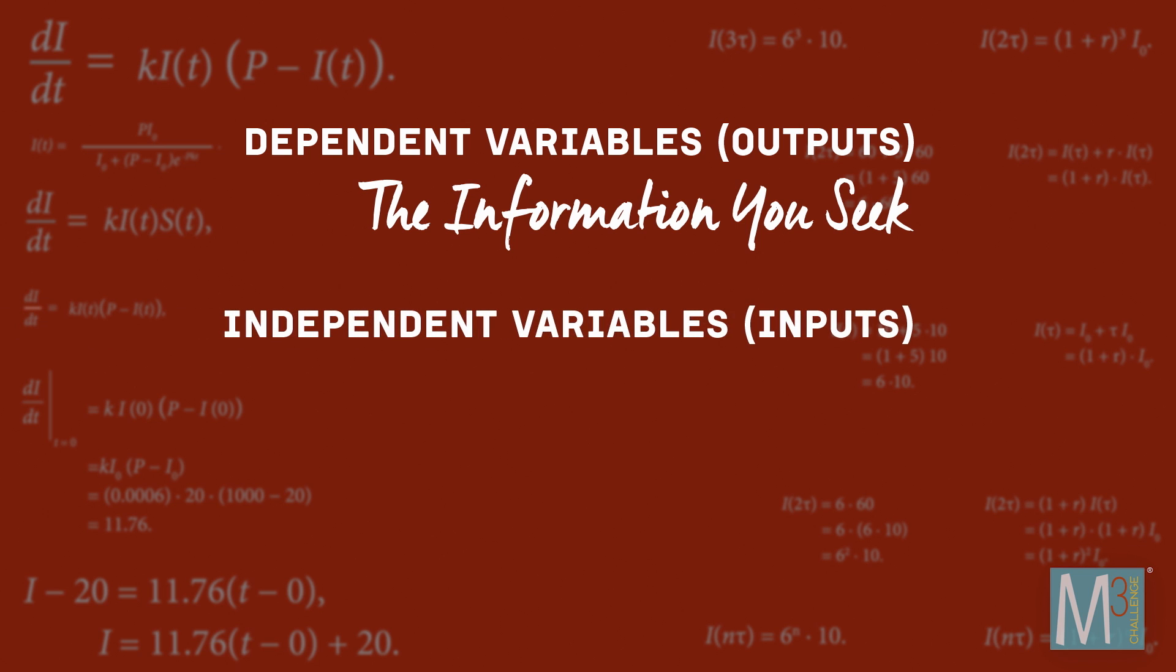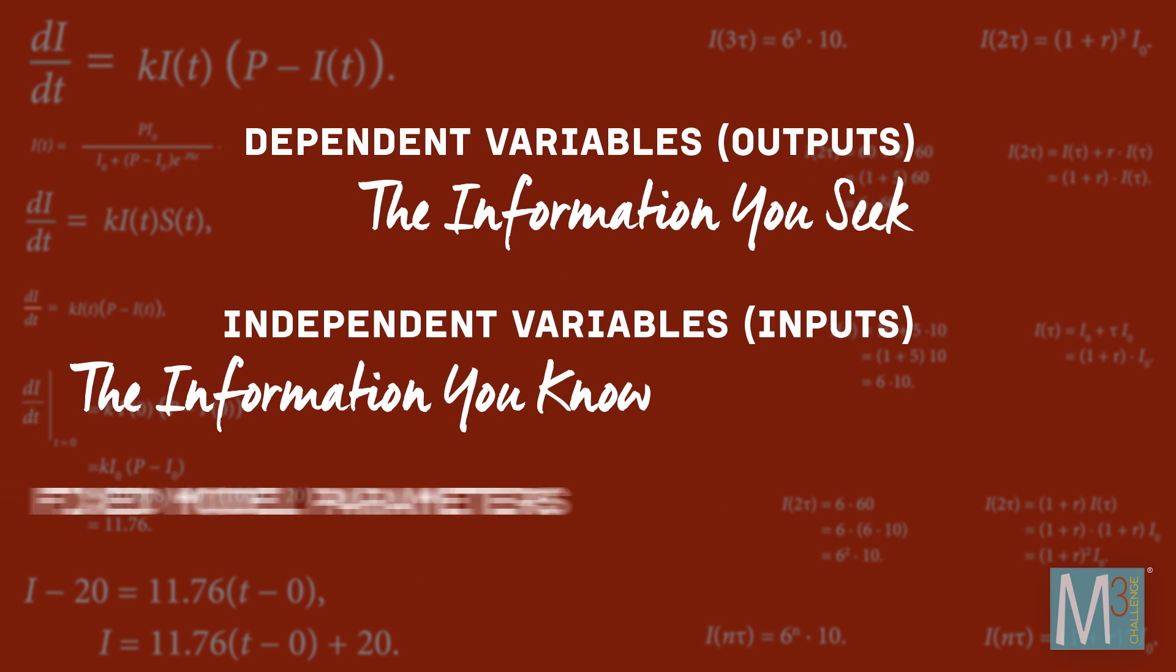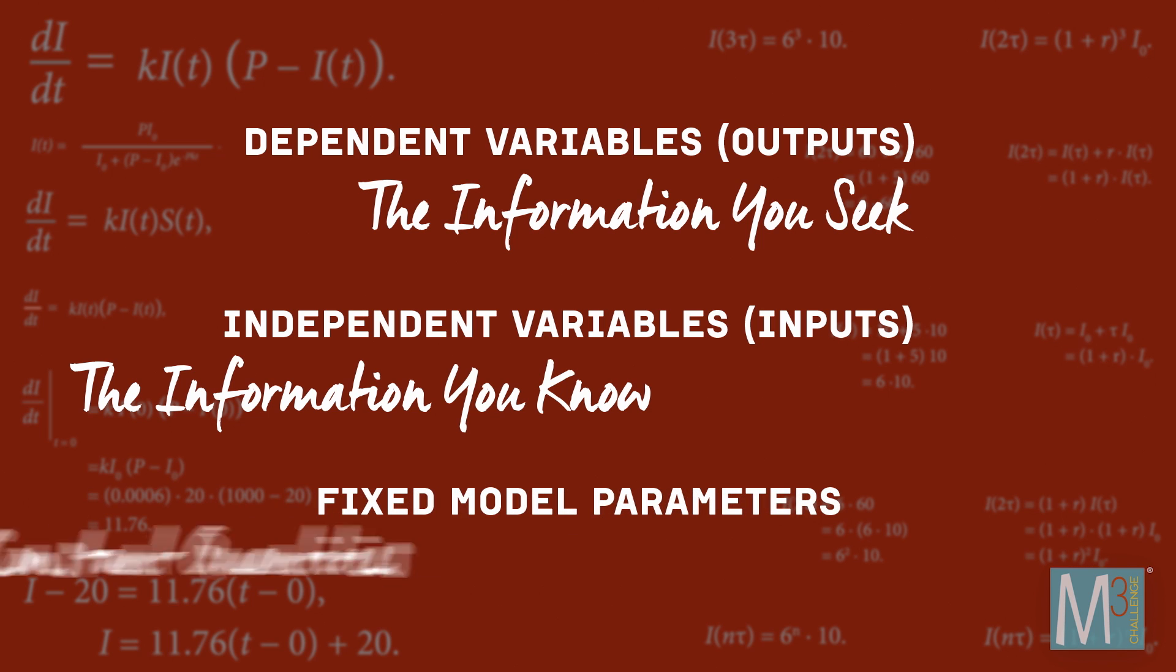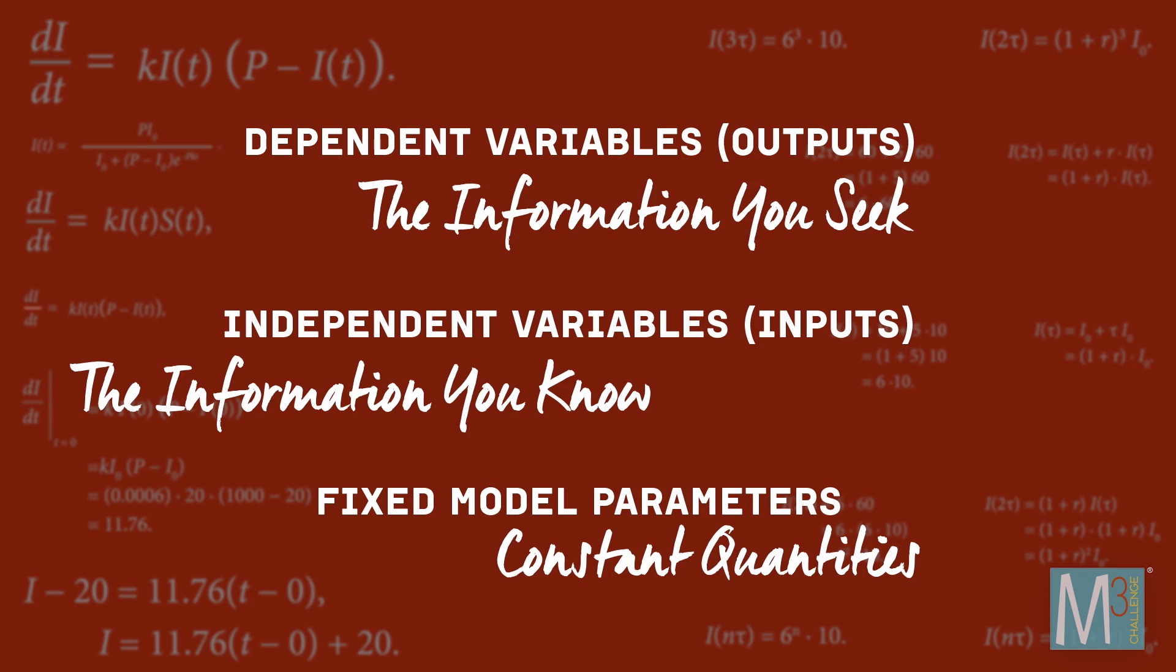Independent variables, also known as inputs, represent quantities you know the value of but may change. Fixed model parameters represent constants, those quantities that remain the same.